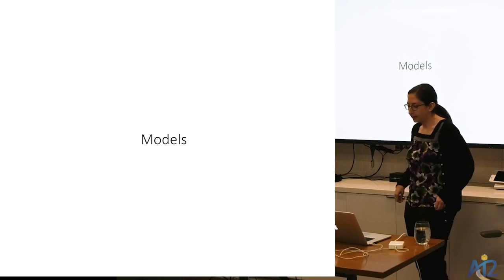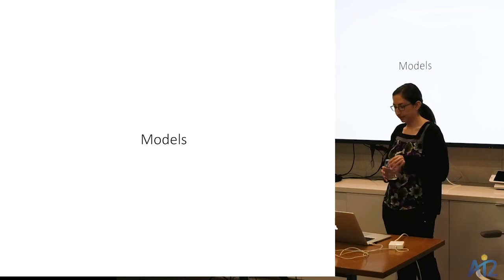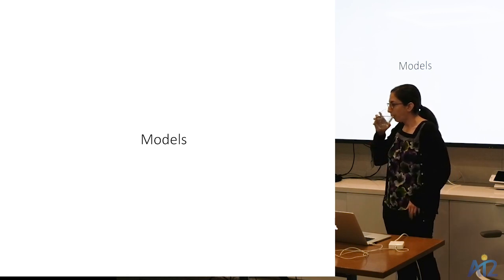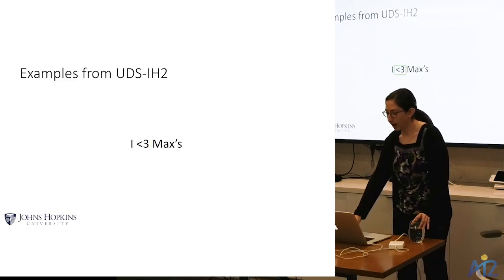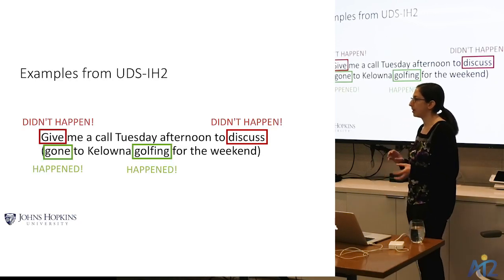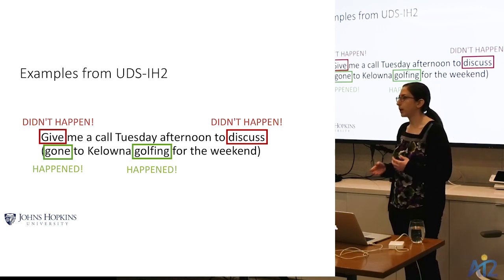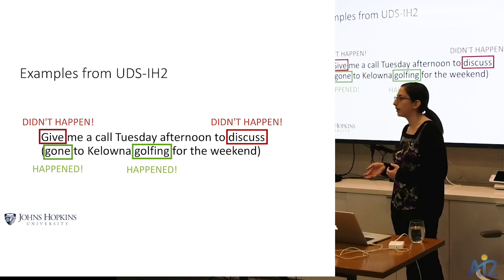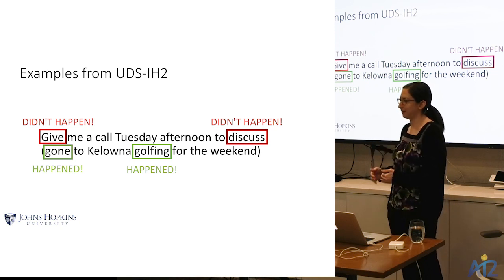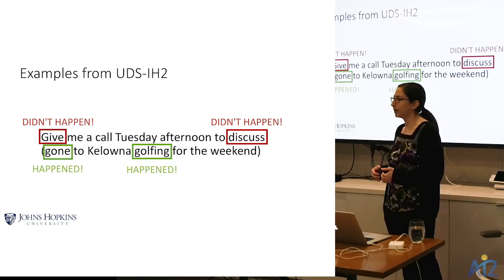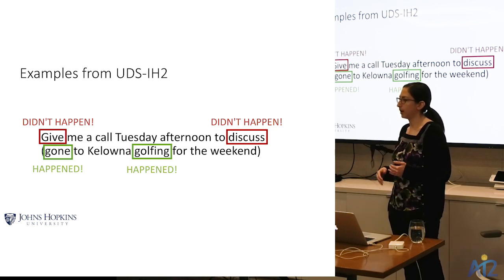Q&A: Asked whether future events are treated as factual — for example, 'give me a call' which could happen in the future — the answer is that annotation protocols differ across datasets. In the It Happened protocol, events are labeled factual only if they already happened or are currently happening; future events are excluded. But not all other datasets follow that protocol.